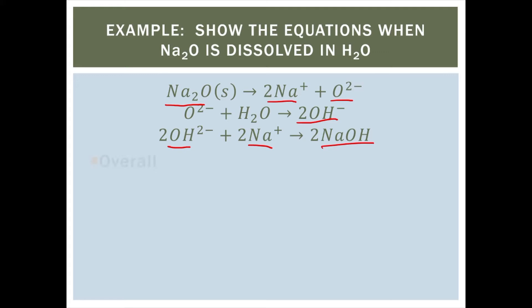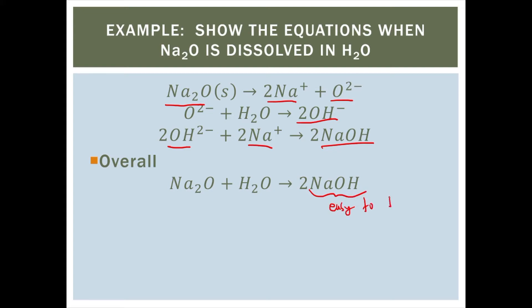Overall, the net reaction would look like your metal oxide added to water creating a metal hydroxide. Generally speaking, these metal hydroxides tend to be easy to dissolve — if present in solution, the metal hydroxide will just dissolve back into metal ions and hydroxide ions. But if you evaporate the water, you can get solid amounts of this metal hydroxide so that you can create basic solutions whenever you need to.